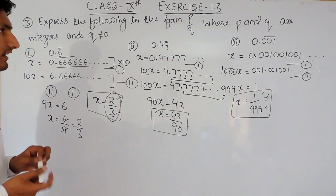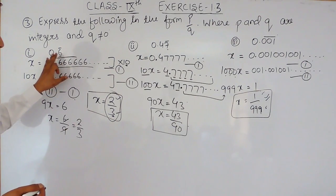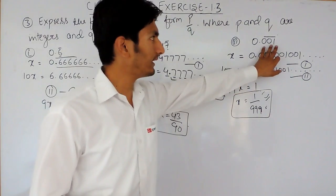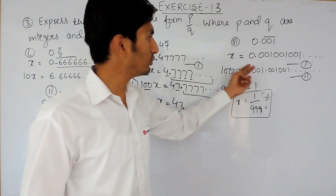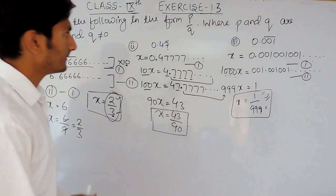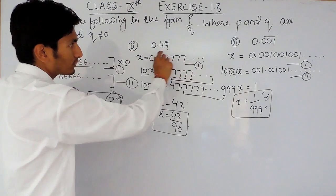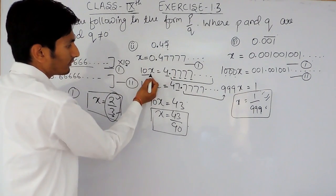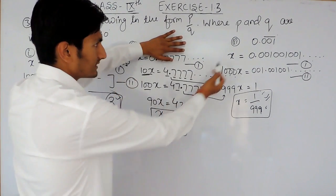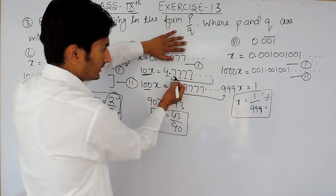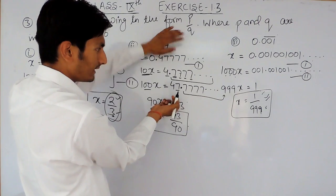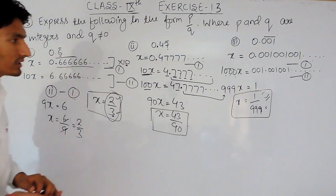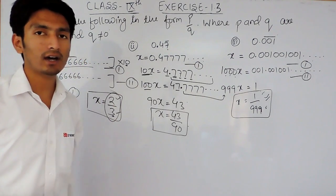Let me revise this for you. If only one digit is repeating, multiply by 10. If three digits are repeating, multiply by 1000. If two digits are repeating, multiply by 100. But for 0.47 bar, since 4 is non-repeating, first multiply by 10 to shift the decimal past the 4, then multiply again by 10 because only one digit is repeating. Subtract the two equations to get your answer.